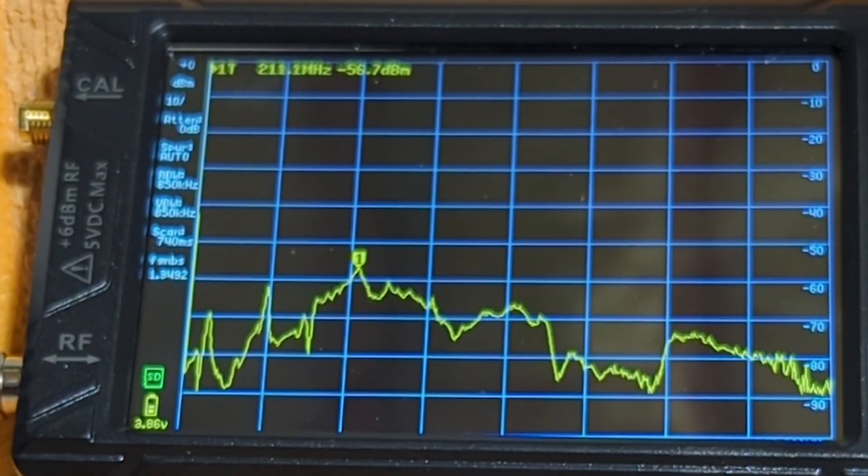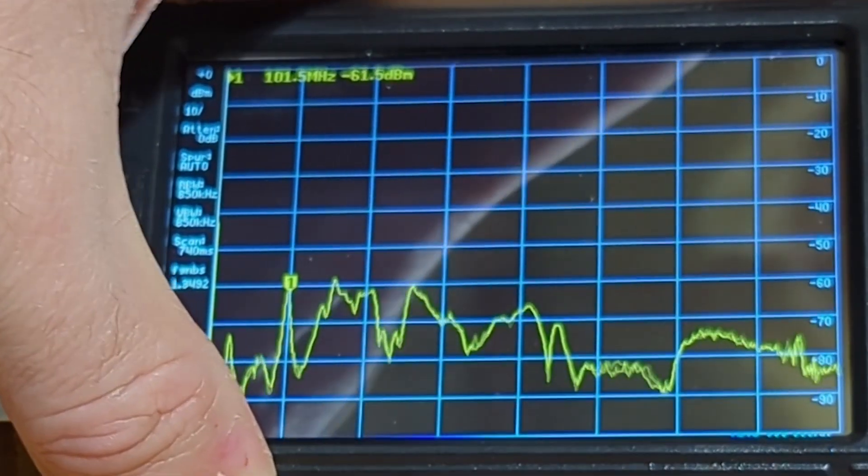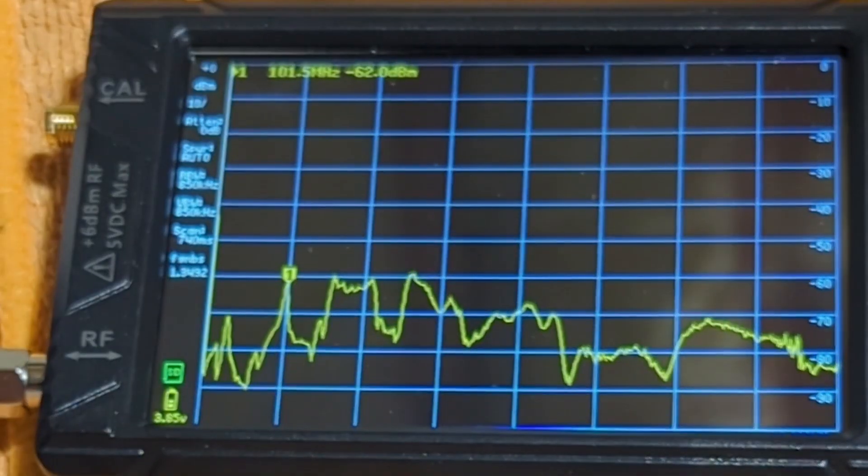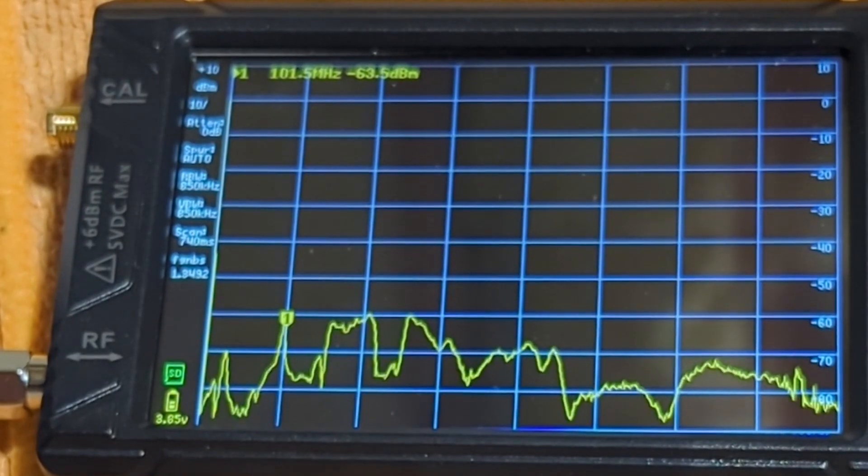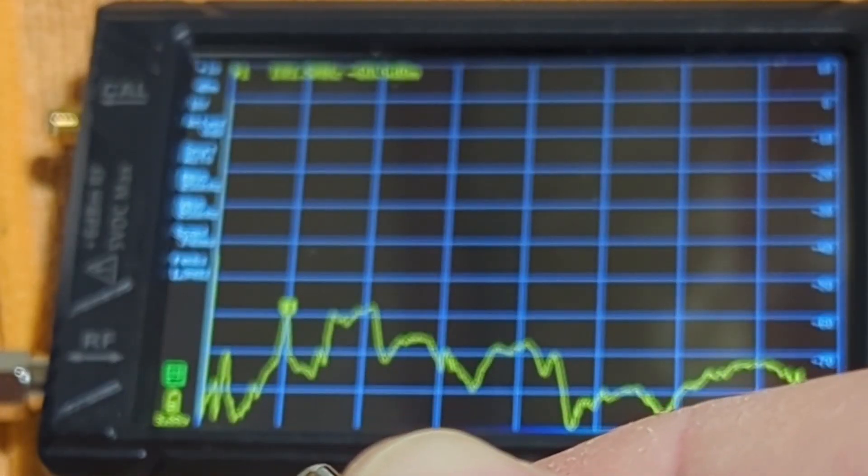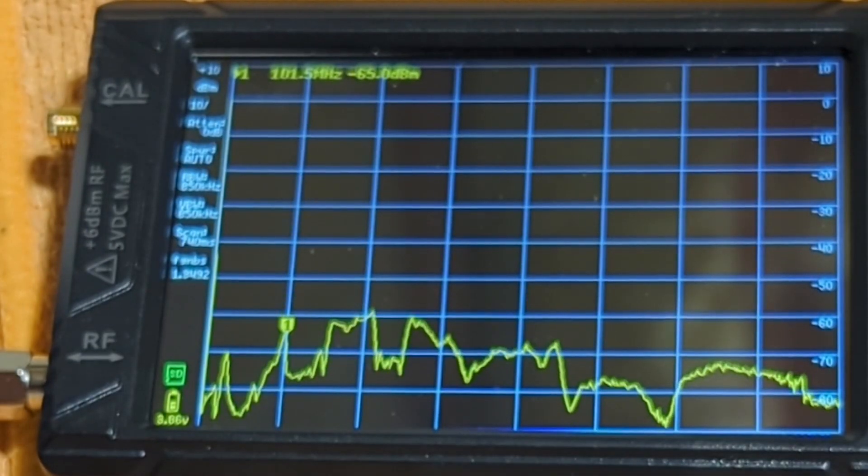It's got peaks everywhere including 100 megahertz that looks perfectly positioned to disrupt localizer reception and it's got all kind of noise between 100 and 200 megahertz which is where the air band is located.